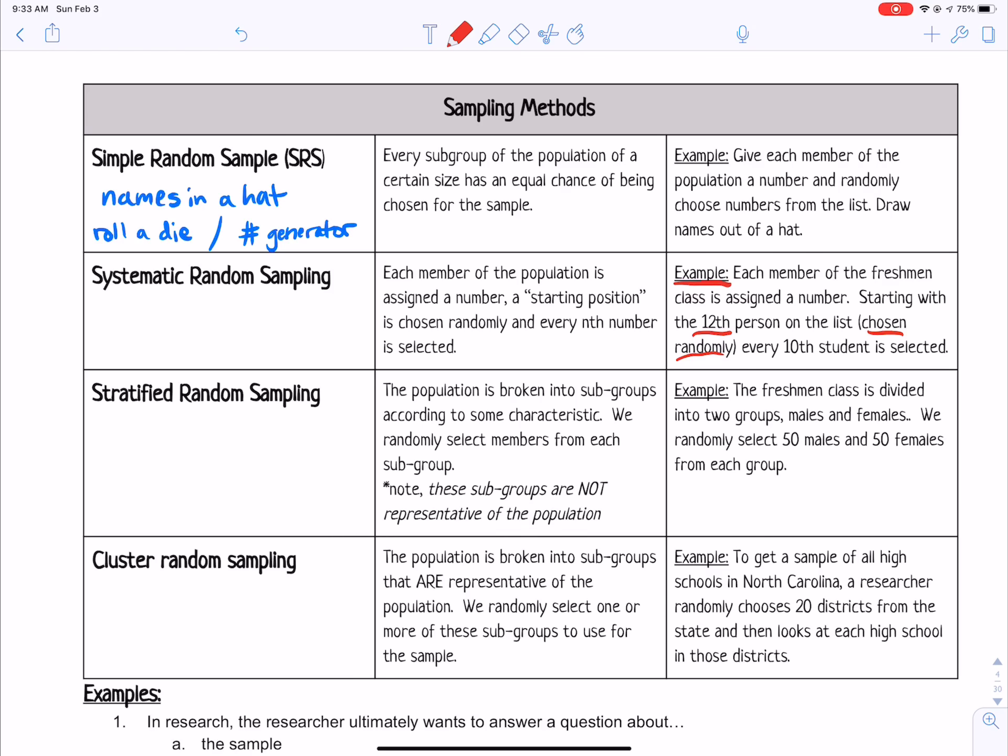So you chose the 12th person to start with. Then maybe you rolled the die again and you rolled a 10. You roll the die and pick 12 for the first person. Roll it again and you have 10. So you choose every 10th student is selected.